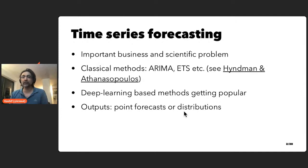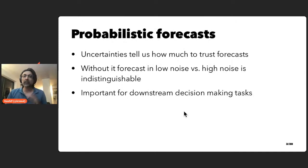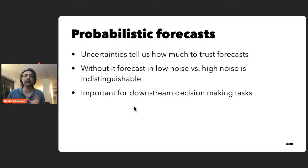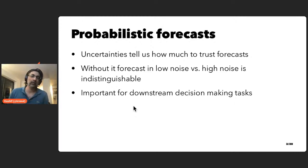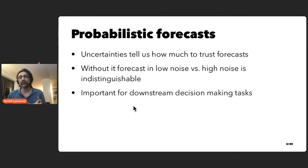When forecasts are probability distributions, they typically come with uncertainty bounds — these are probabilistic forecasts. The problem of modeling uncertainty in time series is of vital importance for assessing how much to trust the predictions for downstream tasks such as anomaly detection or business decision making. Without probabilistic modeling, you cannot distinguish between a region of low noise with small variance versus a scenario with high noise.